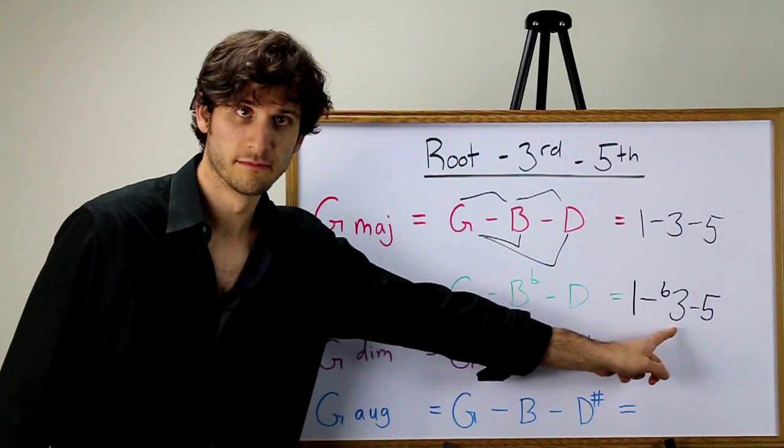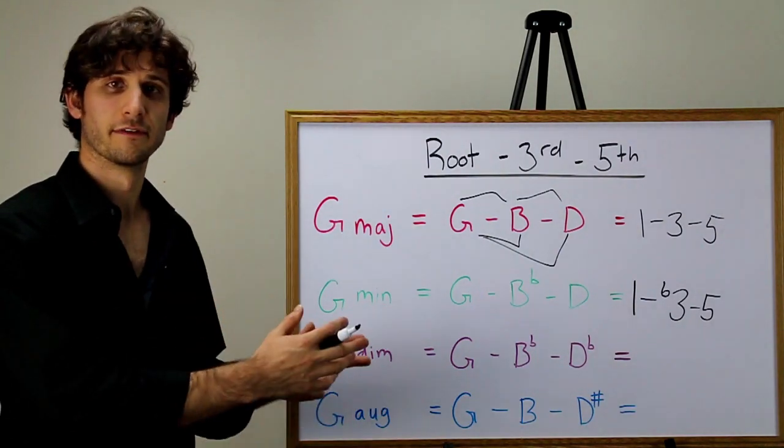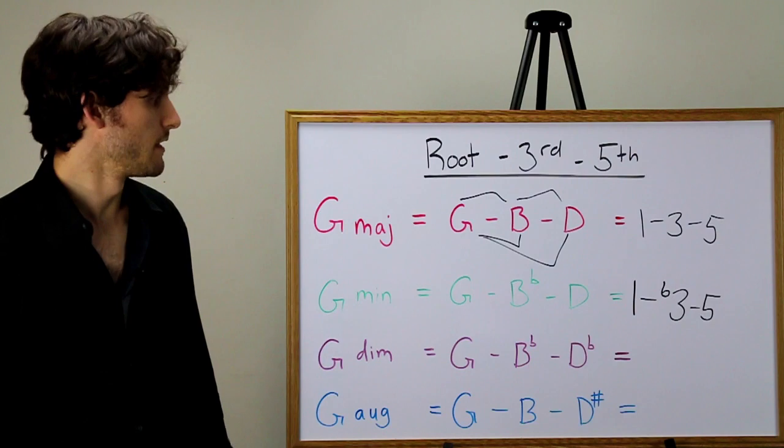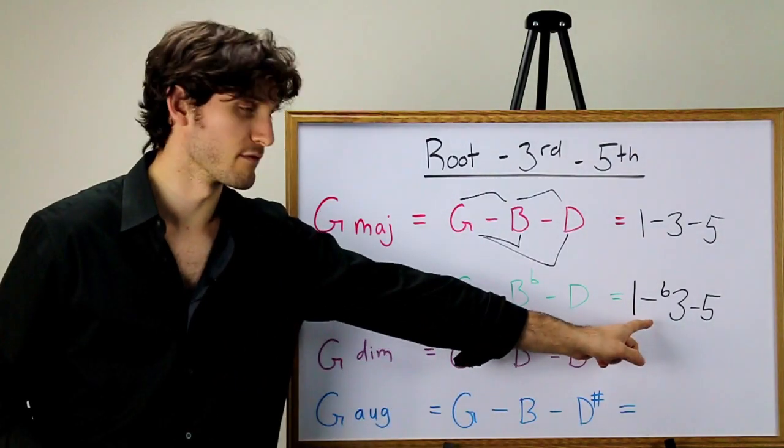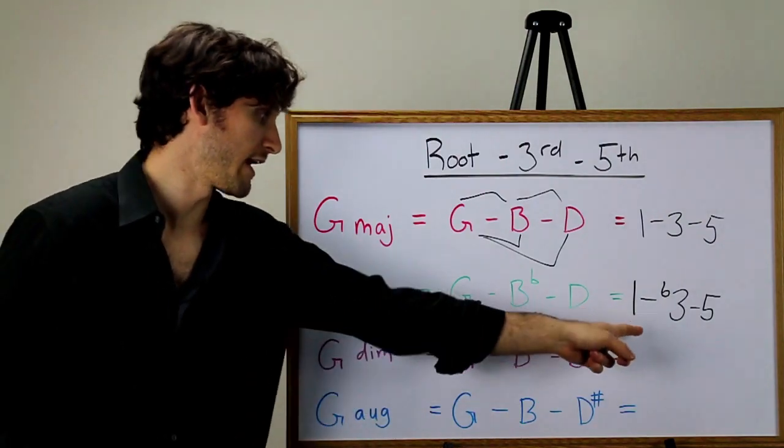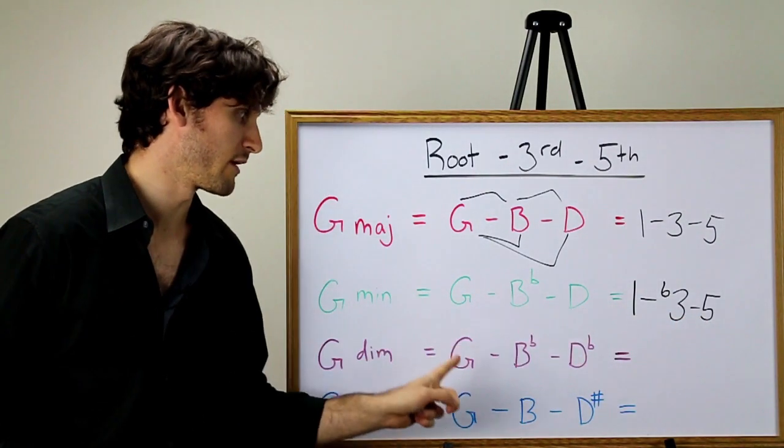This is pronounced flat three to represent the fact that the third, which was previously major, has been flatted and moved down by a half step. This is the basic construction of a minor chord: one, flat three, five. You have a one which is the root, a flat three which is a minor third away from the root, and then a five which is a perfect fifth away from the root.